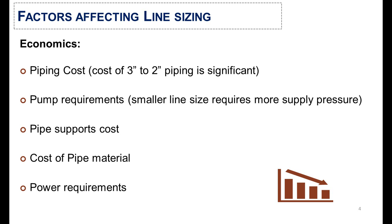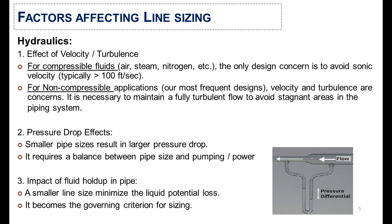The last economic factor is pipe power requirements. In hydraulics, the first consideration is the effect of velocity and turbulence. For compressible fluids — for example, air, steam, and nitrogen — the only design concern is to avoid sonic velocity, which is typically greater than 100 feet per second. For non-compressible applications, which are mostly used in designs, velocity and turbulence are concerns, and it is necessary to maintain fully turbulent flow.